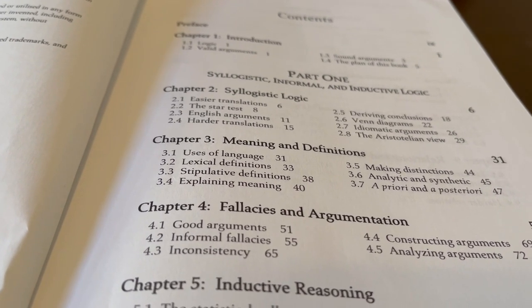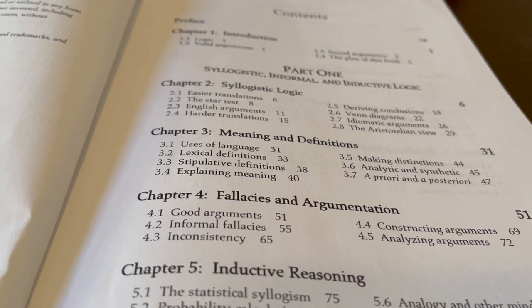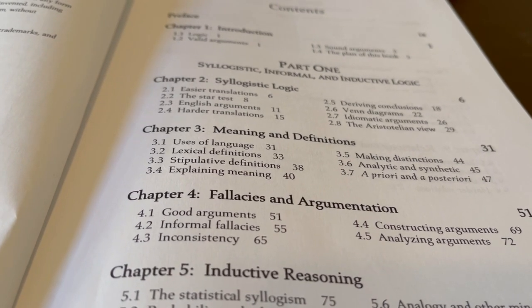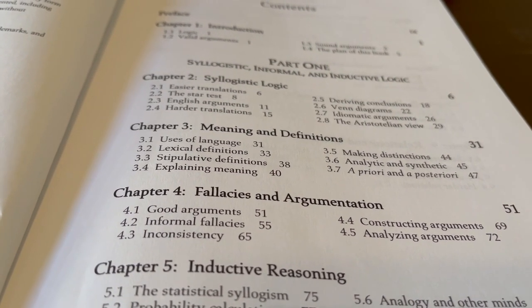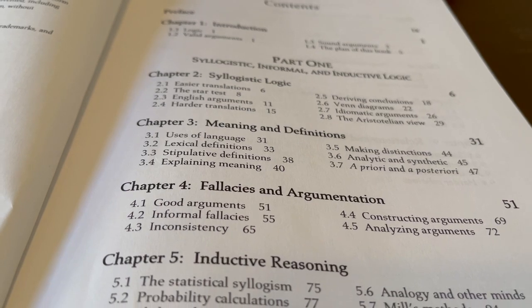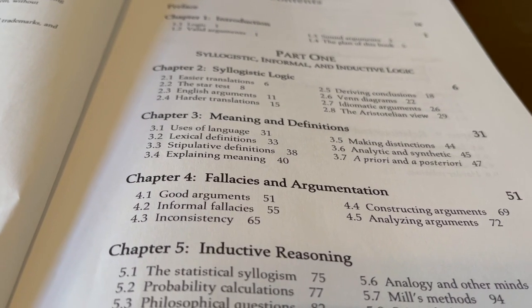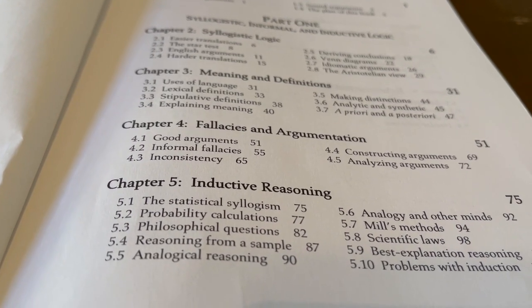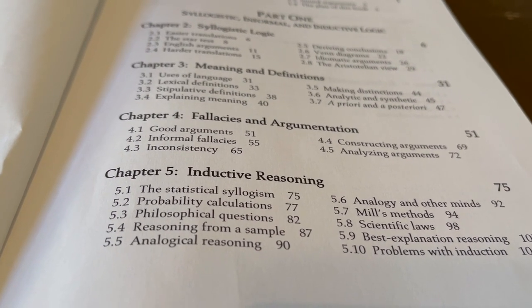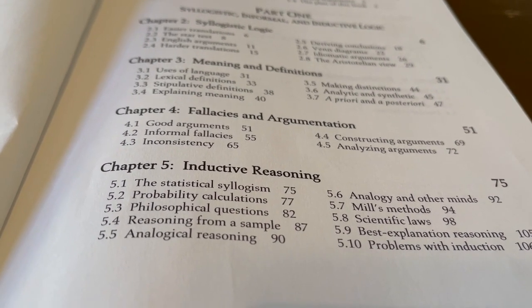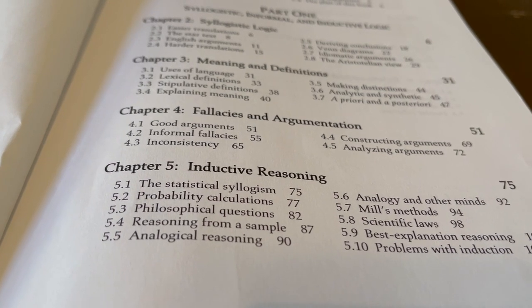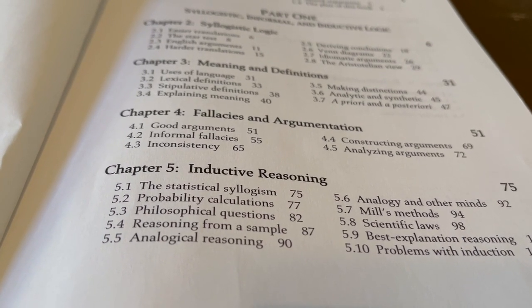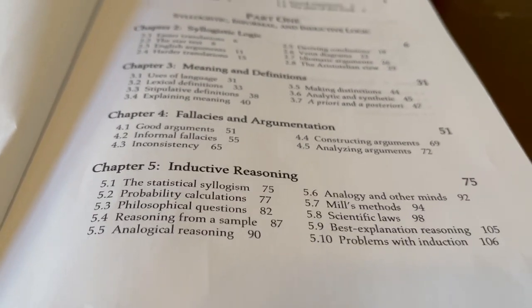Chapter three is on meaning and definitions. For example, what's the distinction between analytic and synthetic propositions? What's the difference between an a priori versus an a posteriori statement? Chapter four is on fallacies and argumentation. Chapter five is on inductive reasoning. For example, the statistical syllogism, probability calculations, analogy, John Stuart Mill's inductive methods, scientific laws, and so forth.